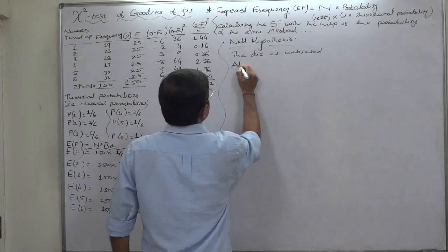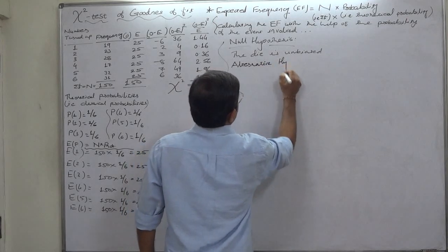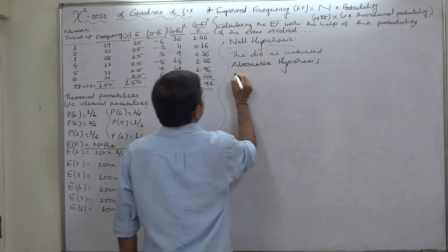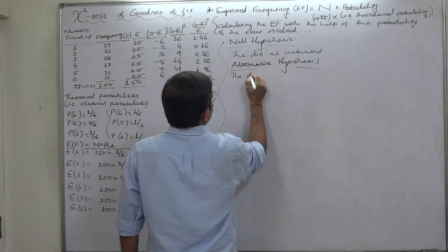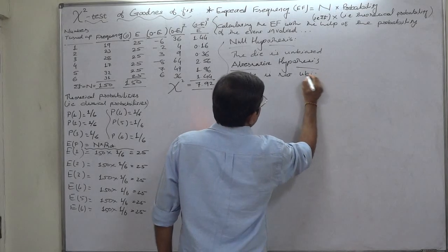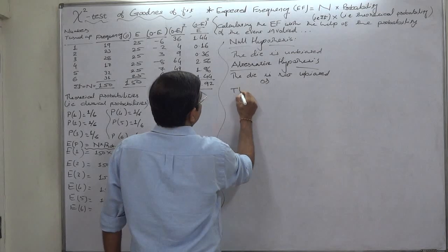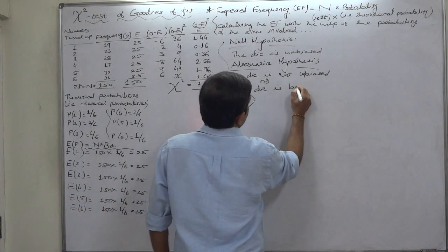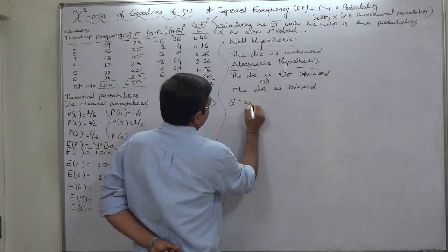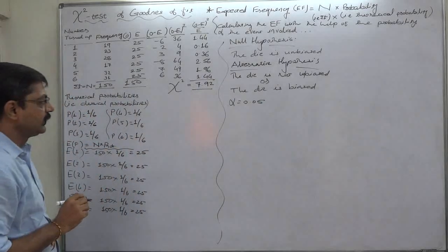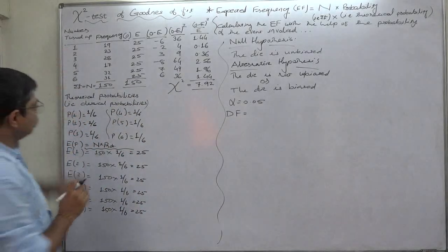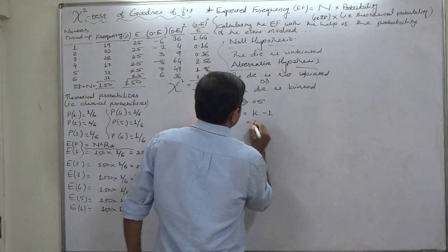And alternative hypothesis is the die is not unbiased or the die is biased. Alpha is to be taken as 0.05 because 5 percent level of significance has been given. And degrees of freedom, number of classes - always take number of classes. They are 6. So degrees of freedom is as high as 5.